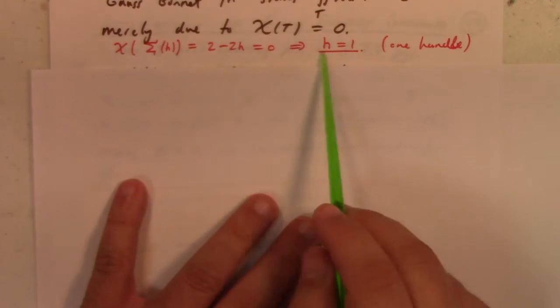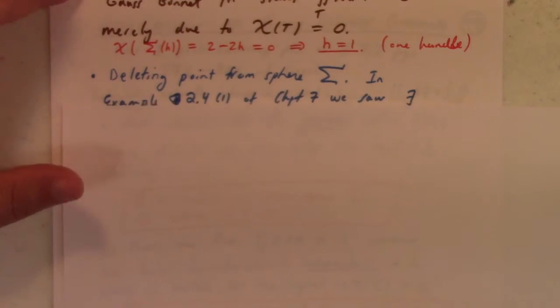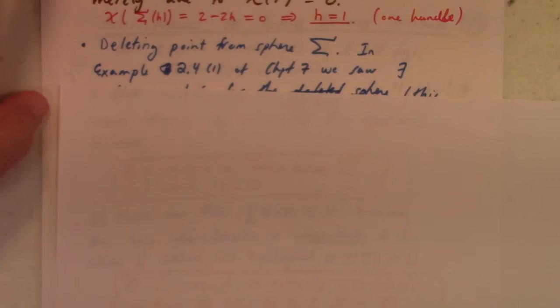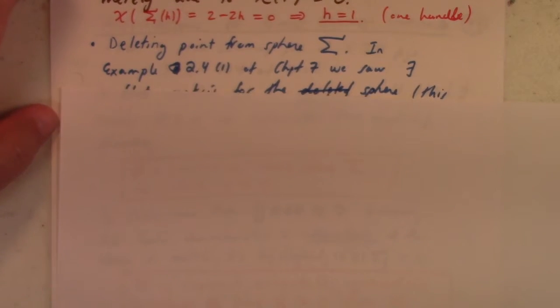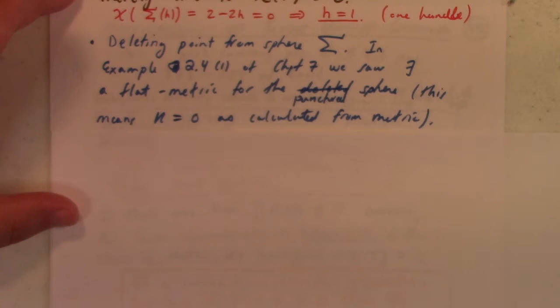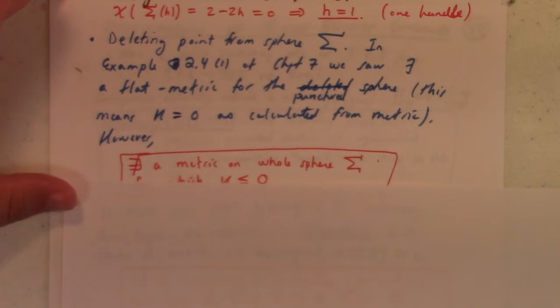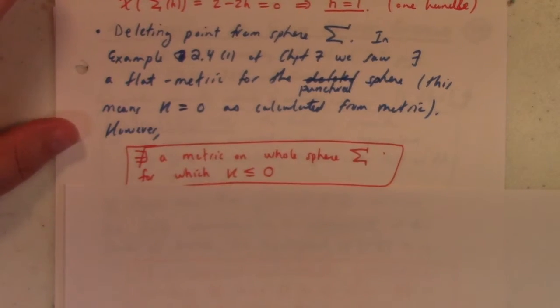If we delete a point from the sphere, we saw that there was a flat metric that we could put on the punctured sphere, which had local Gaussian curvature zero and global Gaussian curvature zero.